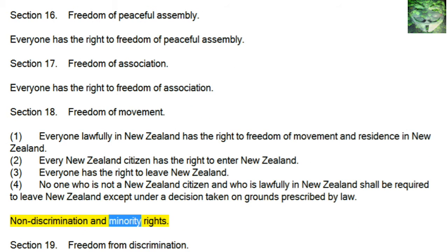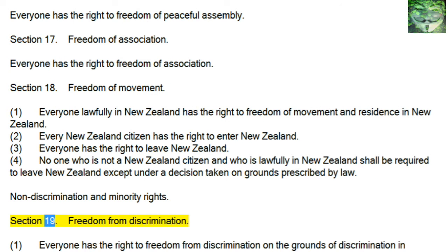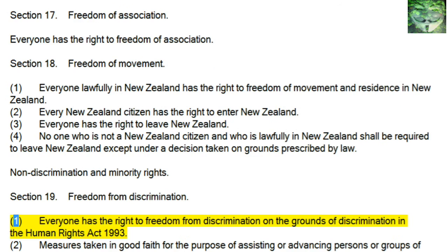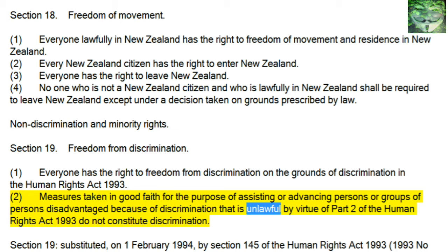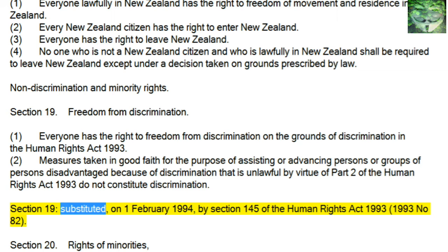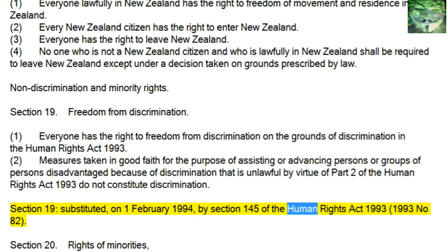Non-Discrimination and Minority Rights. Section 19, Freedom from Discrimination: 1. Everyone has the right to freedom from discrimination on the grounds of discrimination in the Human Rights Act 1993. 2. Measures taken in good faith for the purpose of assisting or advancing persons or groups of persons disadvantaged because of discrimination that is unlawful by virtue of Part 2 of the Human Rights Act 1993 do not constitute discrimination. Section 19 was substituted on 1 February 1994 by Section 145 of the Human Rights Act 1993 (1993 No 82).